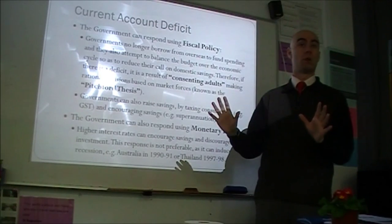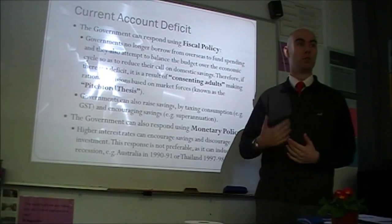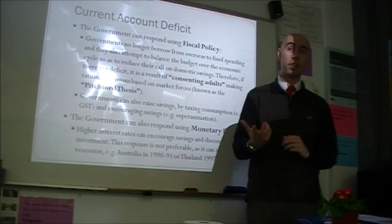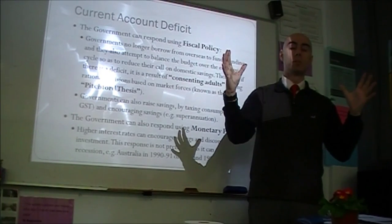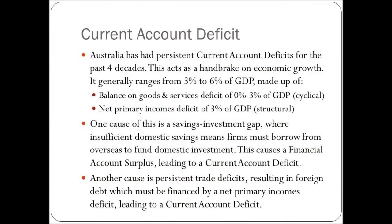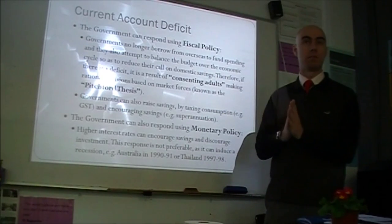In terms of fiscal policy, there is also a microeconomic dimension: governments can raise savings by taxing consumption rather than savings. The GST is a great example — it taxes consumption, not savings. Policies like compulsory superannuation and encouraging people to add to it also boost savings. Both of these things add to savings, which reduces the investment-savings gap.